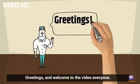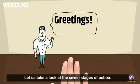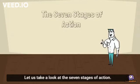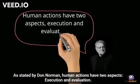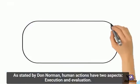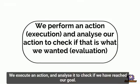Greetings and welcome to the video everyone. Let us take a look at the seven stages of action. As stated by Don Norman, human actions have two aspects: execution and evaluation. We execute an action and analyze it to check if we have reached our goal.